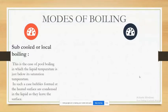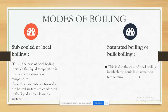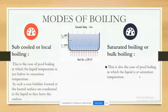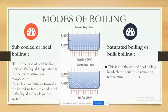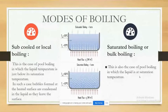Sub-cooled or local boiling — this is the case of pool boiling in which the liquid temperature is just below its saturation temperature. In such a case, bubbles formed at the heated surface are condensed in the liquid as they leave the surface, as shown in the diagram. Saturated boiling or bulk boiling — this is also the case of pool boiling in which the liquid is at saturation temperature.